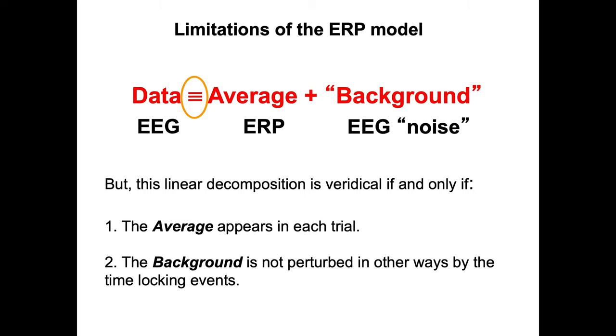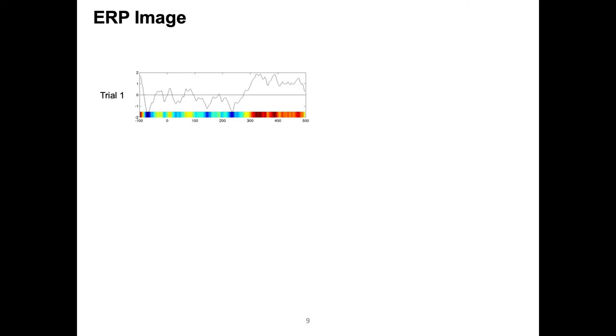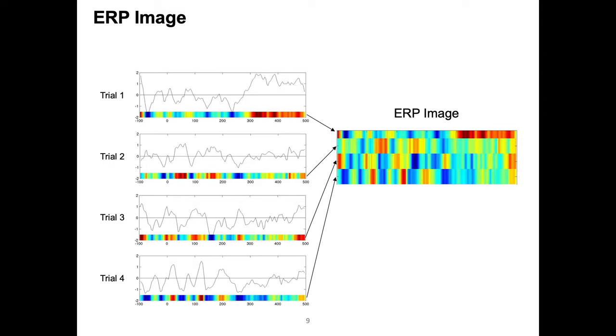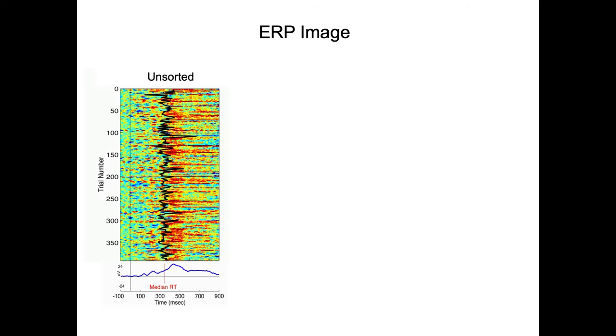The first tool, one of the tools we developed in EEGLAB, is called ERP image and that's a way to look at the single trials. This is one trial and you can see the EEG activity for one electrode and this can be color-coded in the sense that blue here is going to be negative potential and red is going to be positive potential. You can do that for several trials and then you can stack them up to create what we call an ERP image. By default they're sorted by time on task, first trial, second trial, etc, but you can also find different types of sorting. For instance these are about 400 trials unsorted and the black trace here represents the reaction time of the subject.